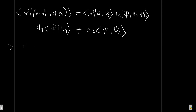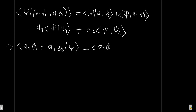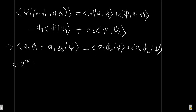Another property is when we do this the other way around. If we have (a1 phi1 plus a2 phi2) as a bra, and then the ket of psi, we can again separate the terms to get a1 phi1 psi plus a2 phi2 psi. Now we can take these complex numbers outside of the bra, but remember — you must take the complex conjugate of the number. So instead of a1 it's a1-conjugate times bra phi1 ket psi, and a2-conjugate times bra phi2 ket psi.